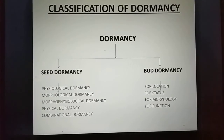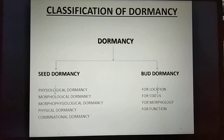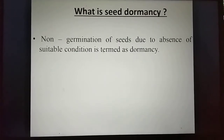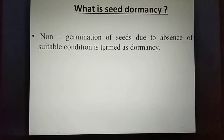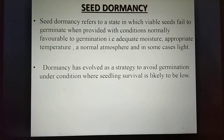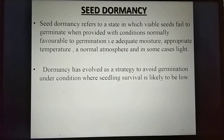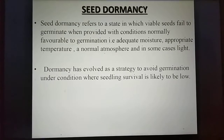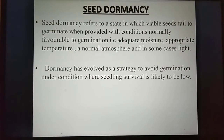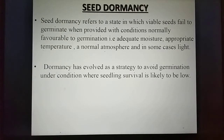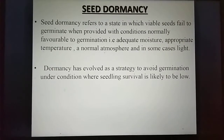Now we come to the classification of dormancy. Dormancy may be classified into two categories: seed dormancy and bud dormancy. Seed dormancy refers to a state in which viable seeds fail to germinate when provided with conditions normally favorable to germination — that is, adequate moisture, appropriate temperature, a normal atmosphere, and in some cases light. Dormancy has evolved as a strategy to avoid germination under conditions where seedling survival is likely to be low.